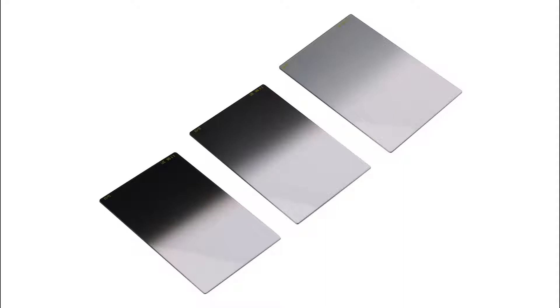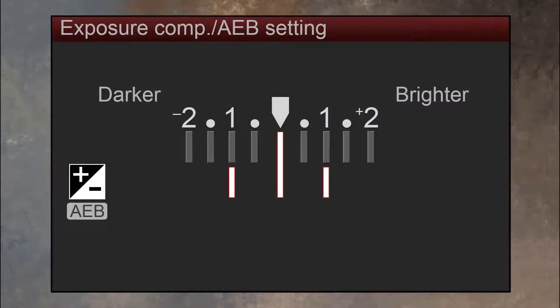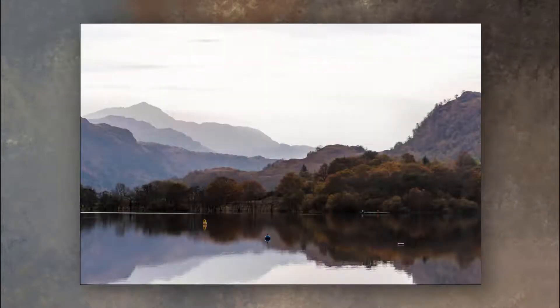Let's take a look at graduated filters first. When we think about why we may want to use the automatic exposure bracketing option, which we've dealt with in another video, we do that in cases where the contrast and exposure range in our scene is greater than the camera can cope with in one shot. We can experience a situation like this, where we take a shot and the foreground is exposed just about right, but we can clearly see that the sky is well overexposed.